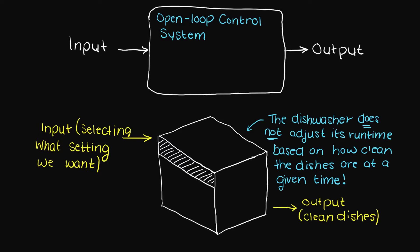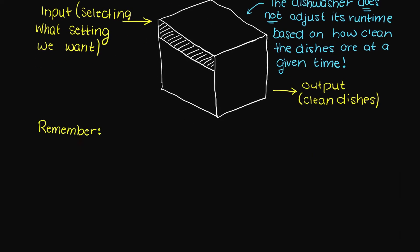Another example could be your toaster timer or the laundry machine. Therefore in all these control systems the output has no effect on the input.